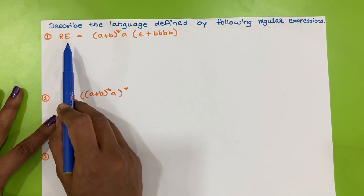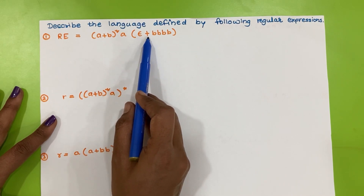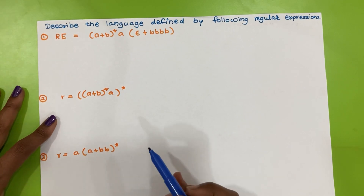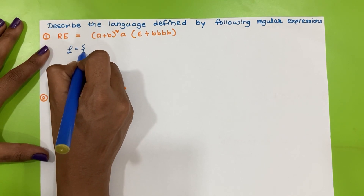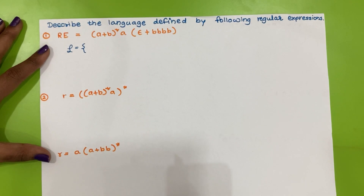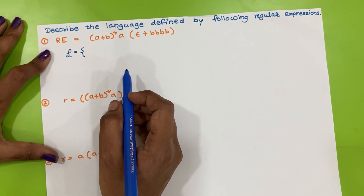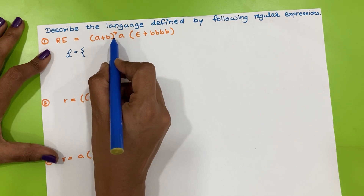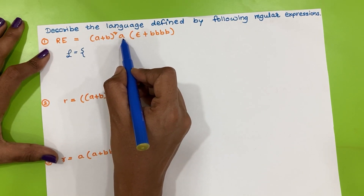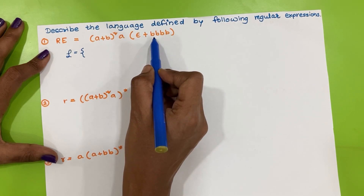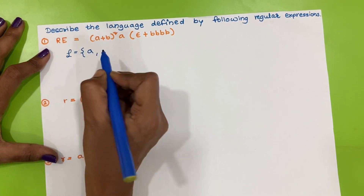The first example: the regular expression is (a+b)* · a · (ε + bbbb). We will try to write the strings that come under this expression. What would be the smallest string? If we take the power of the bracket as 0, then 'a' is compulsory. Taking the empty option gives us the string 'a' only.